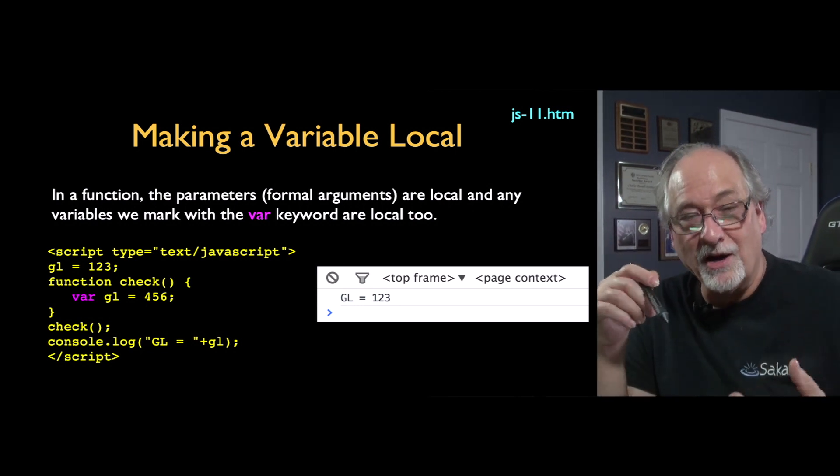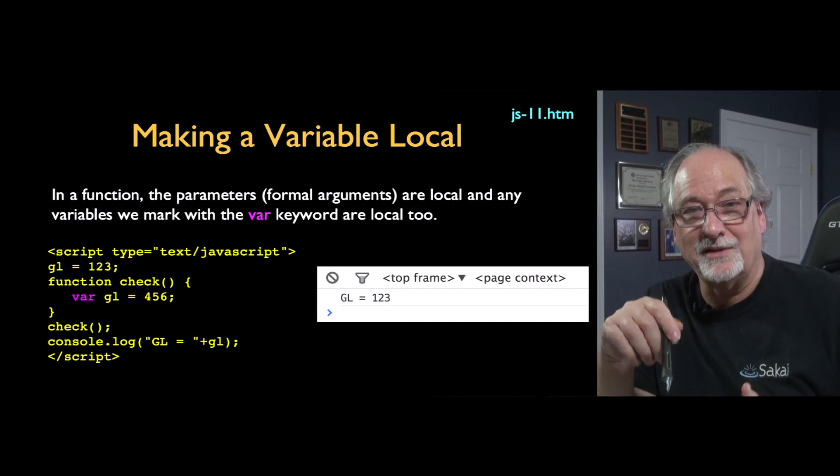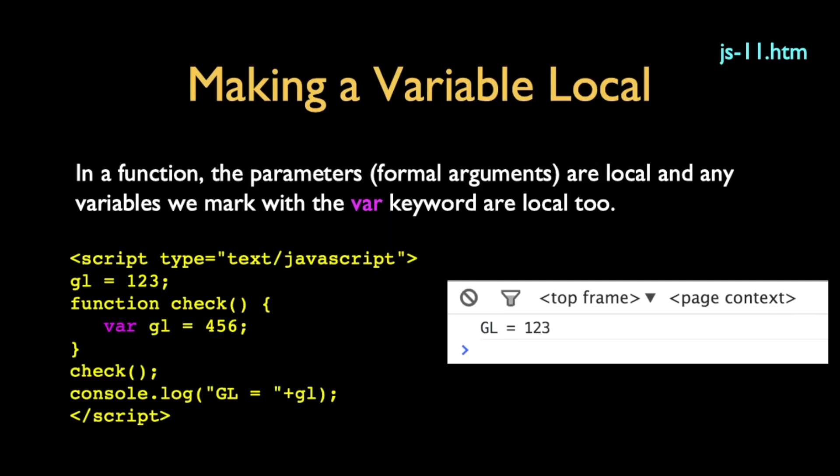So the var keyword basically says it's local. It's just, this is a variable and it's local. And so I can say var gl equals 456. That means that variable has no effect outside the function, i.e. the function lives in its own little silo, which is the way most functions usually work, unless we explicitly bust out of the little silo.